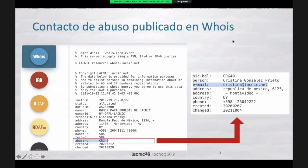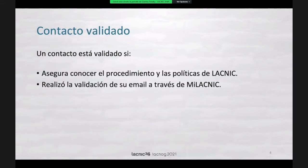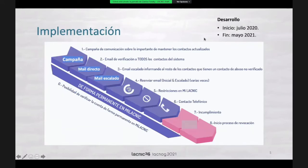What does this mean? When in the WHOIS you're looking for information, you always have abuse contact. In relation to that, we have information including the name, the email address, among other things. So what does this policy do? It requires the abuse contacts of all the blocks, IP addresses, and ASNs to validate and monitor and to have their mailboxes surveyed. So if a contact is validated, it ensures knowing the procedure of LACNIC policies, and it means that the validation of the email was done through LACNIC.